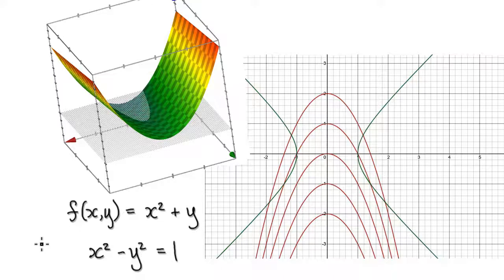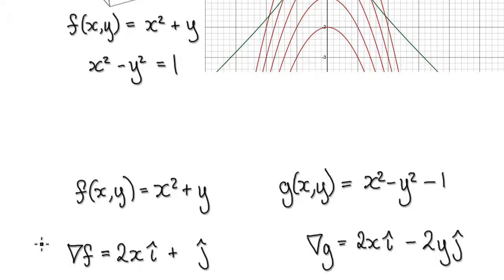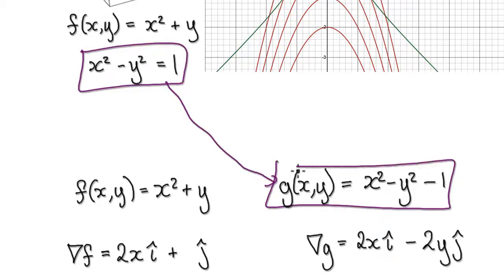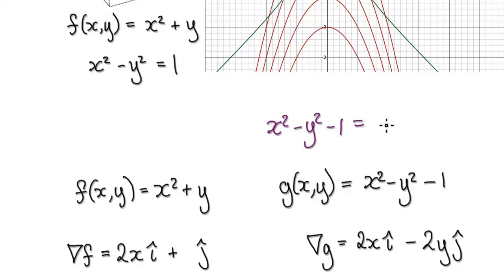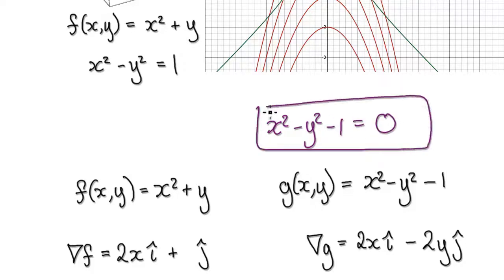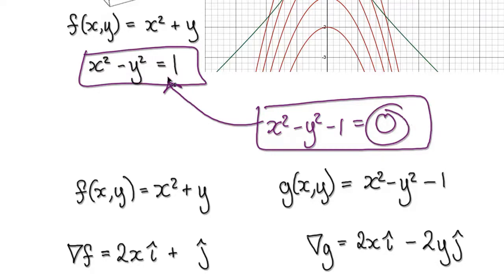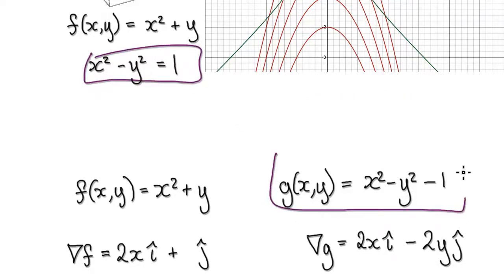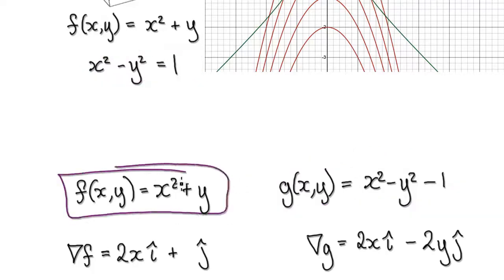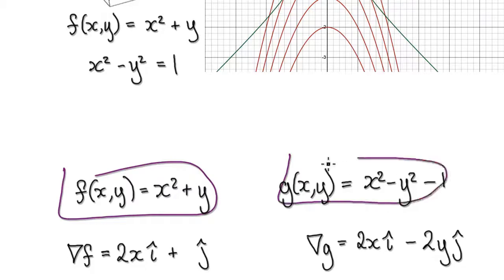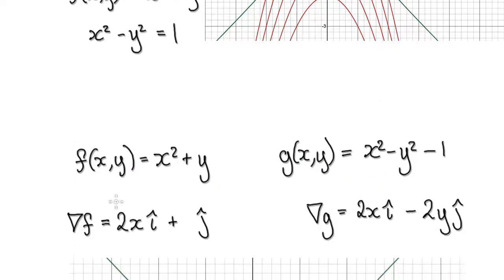To do this, we need to turn our constraint into a function. So let's imagine it as this function. When this function spits out a value of zero, it is in effect describing the constraint which lives on the XY plane at level zero. We can turn this into a function and now imagine this function as a surface, just like the other surface.